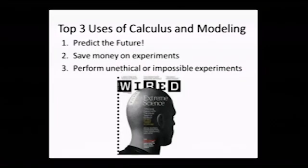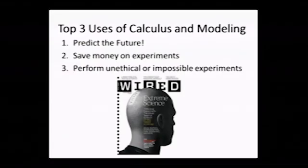The category of models I've worked on for the most part are models where the experiment that would give you the same information is unethical. Wired Magazine had a very interesting article talking about seven experiments that would teach us so much about human health and behavior, but we can't do them because they're unethical. What I'd like to highlight is that in some cases, there's an alternative to the unethical experiment.